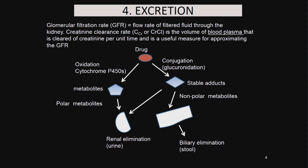Excretion is the fourth component of ADME. We have the glomerular filtration rate, GFR, which is the glomerular flow rate of filtered fluid through the kidney. Creatinine clearance rate (CCR or CRC) is the volume of blood plasma cleared of creatinine per unit time. This is a very useful measure of understanding GFR — how much creatinine gets removed per unit time from the blood plasma tells you the GFR.